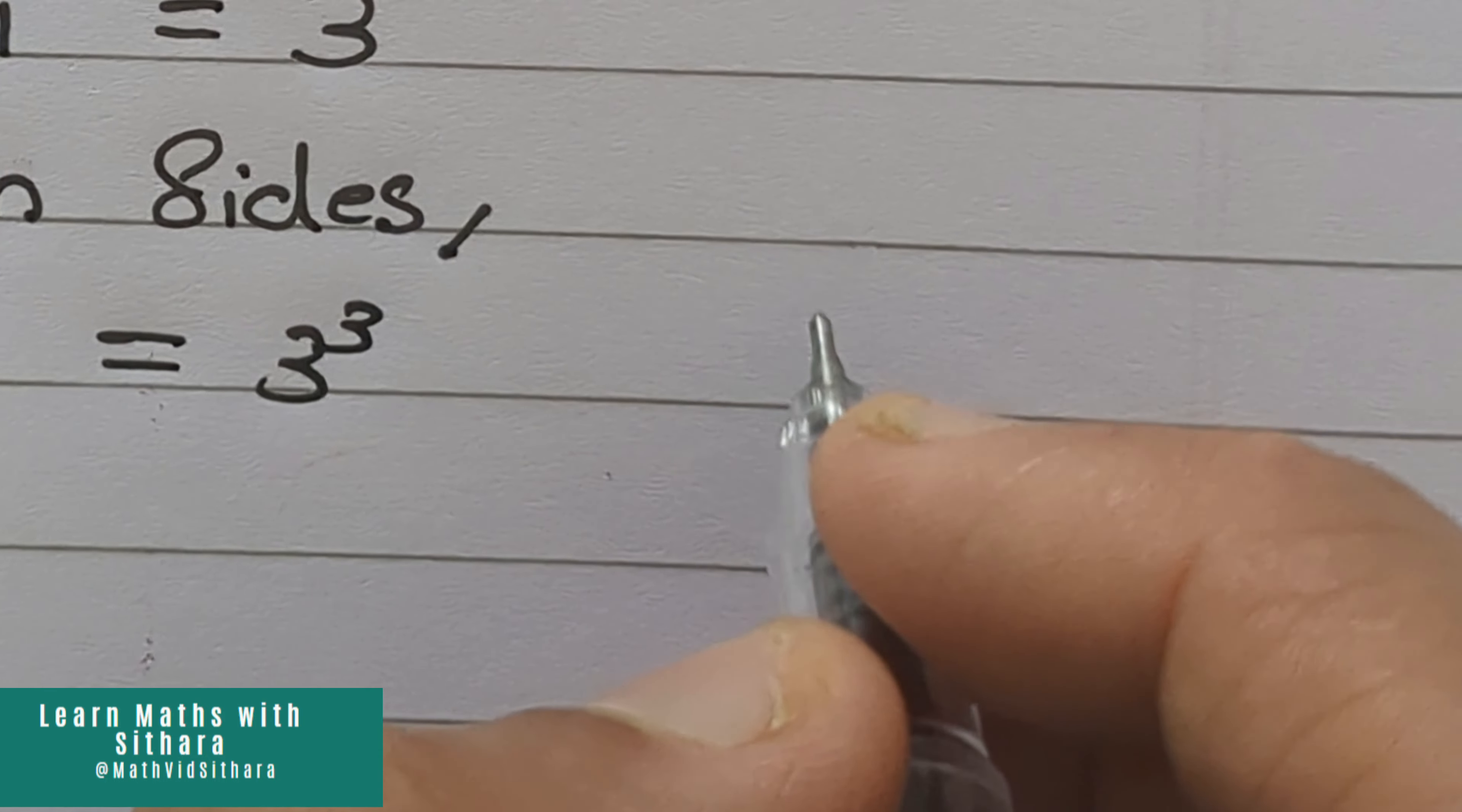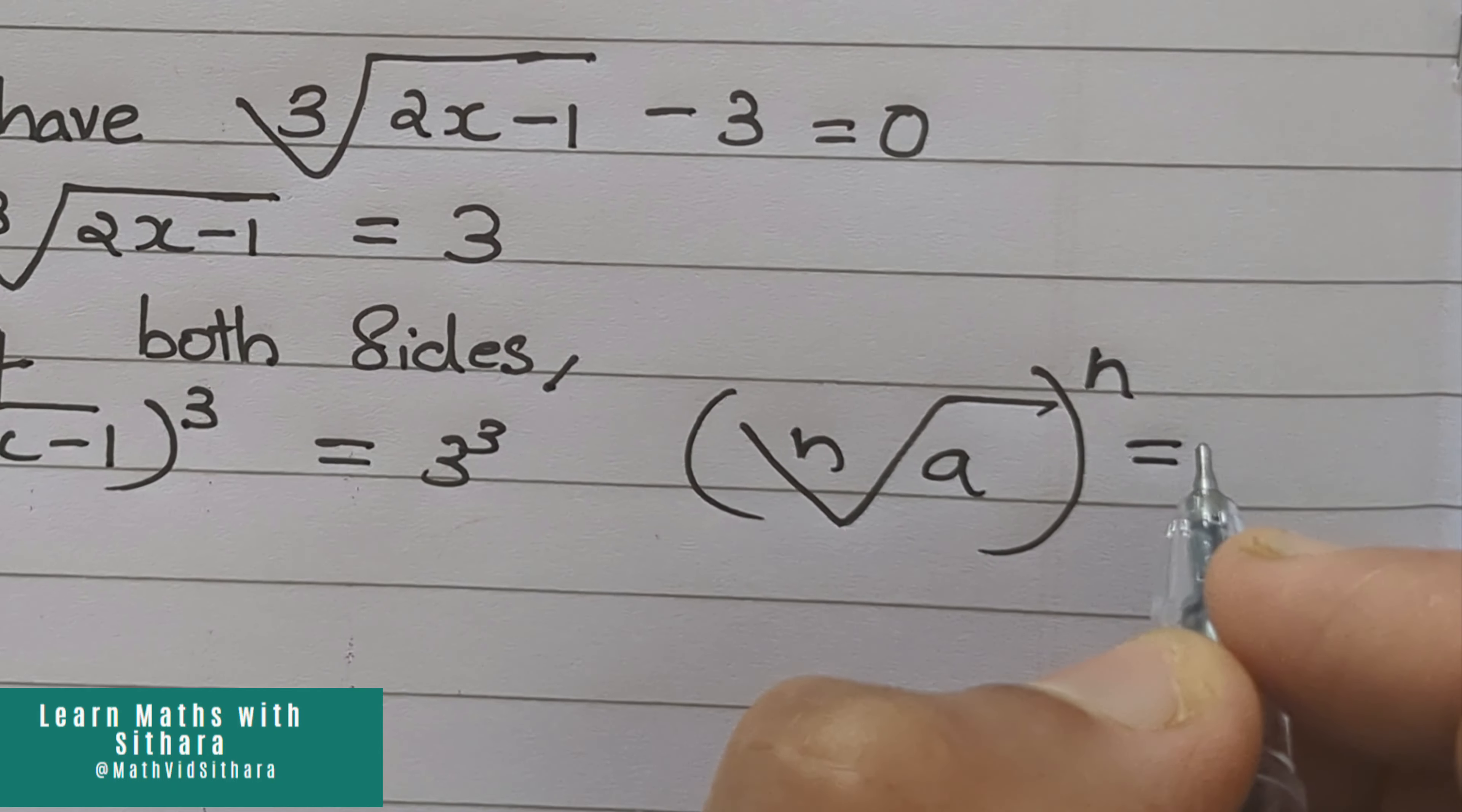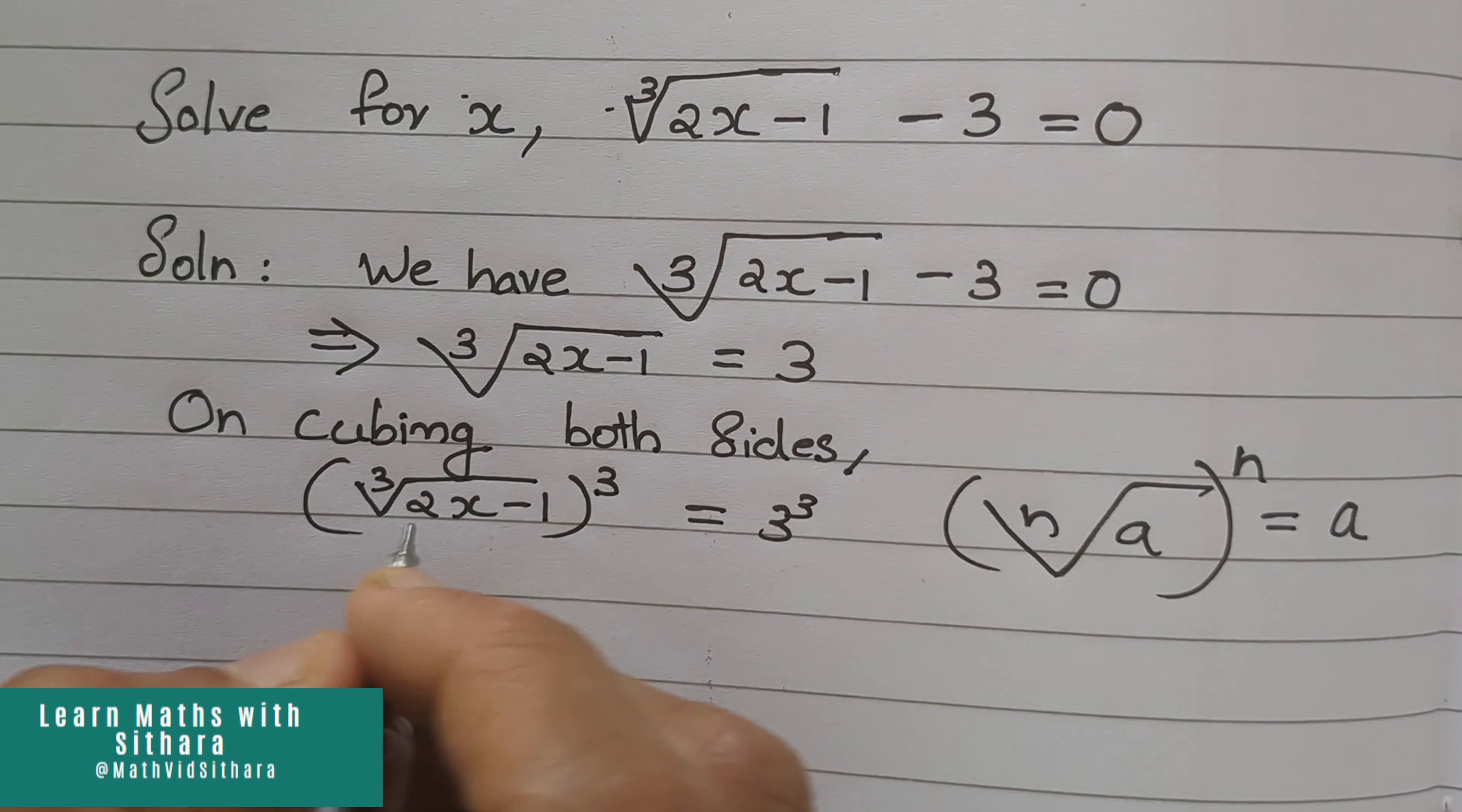We know that n root a raised to n equal to a. On applying this here, we will get 2x minus 1 equal to 27.